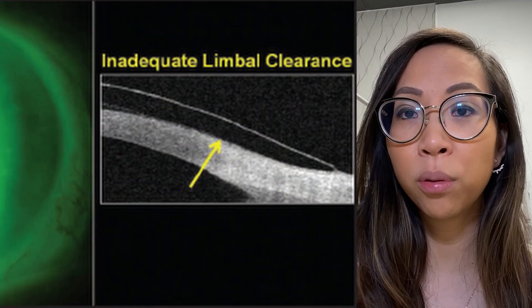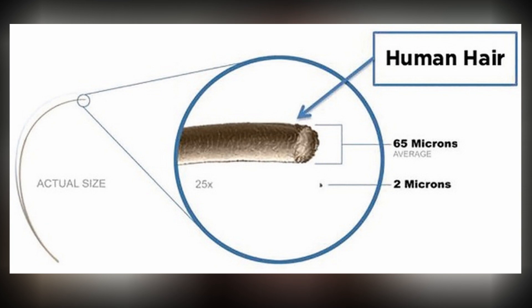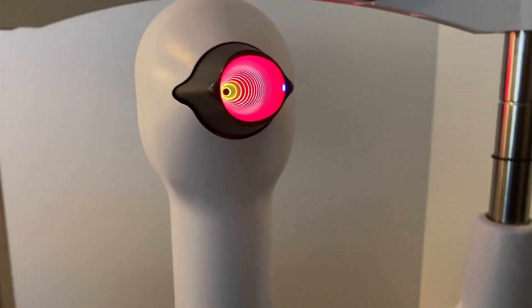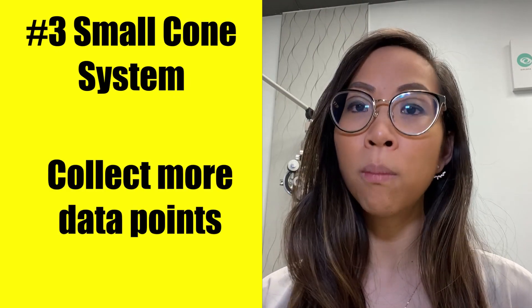This is important especially when fitting scleral lenses. These lenses not only vault entirely over the cornea, but you also need to clear the limbal zone. So knowing the shape of not only the cornea but also the limbal zone is critical when designing the lens and determining the overall diameter. The Medmont E300 is also extremely accurate, with a standard deviation of error of less than 2 microns. To put that into perspective, the average human hair thickness is 75 microns. This topographer is known as a small cone system because of its smaller cone design compared to large cone systems, and small cone designs collect more data points and are ultimately more accurate.